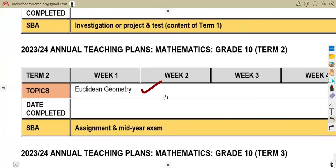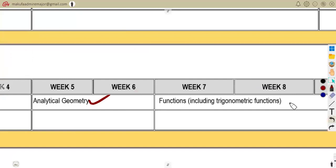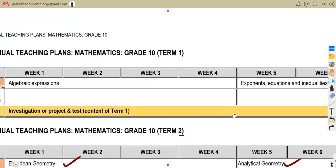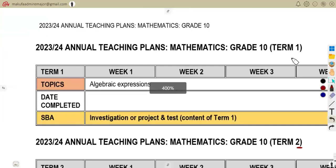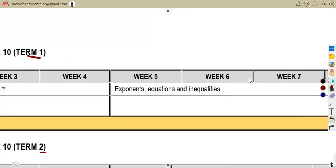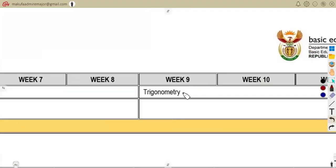Remember your term two: Euclidean geometry, analytical geometry. You worked with functions, including trigonometric functions. They are saying revise all those and everything as you had even back in your term one. Your algebraic expressions, your exponents, equations, and inequalities as you had in your term one. Your trigonometry as well.